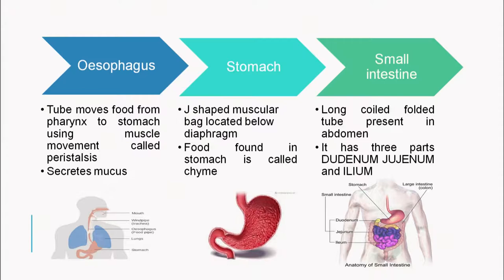After the esophagus, food — now called a bolus — passes into the stomach, a J-shaped muscular sac located below the diaphragm. Once in the stomach, after the action of certain enzymes, the food changes into chyme. While it was in the esophagus it was a bolus; after enzymatic action in the stomach it becomes chyme.